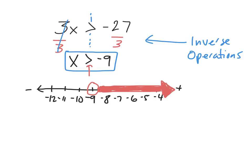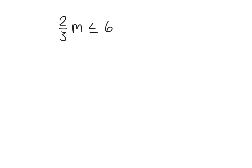All the problems we'll work on for this discussion will either require multiplication or division. Let's try another one. This particular inequality says two-thirds times m — or (2/3)m — is less than or equal to 6.